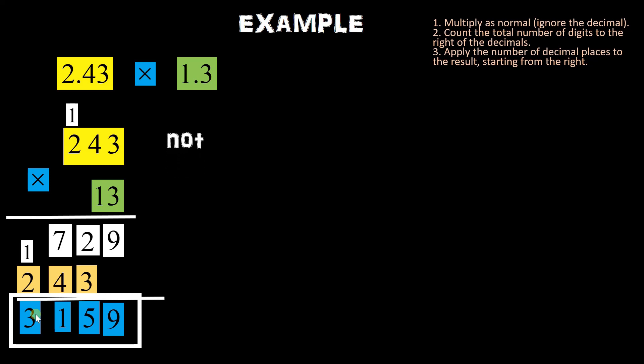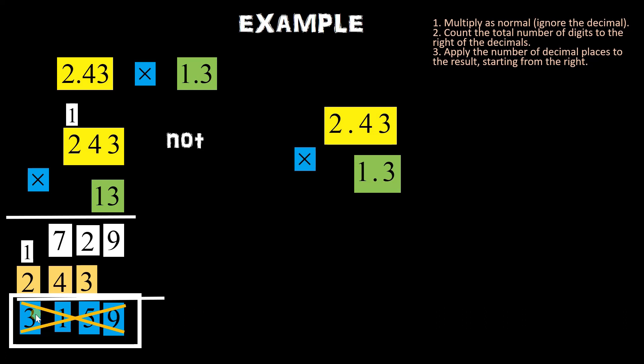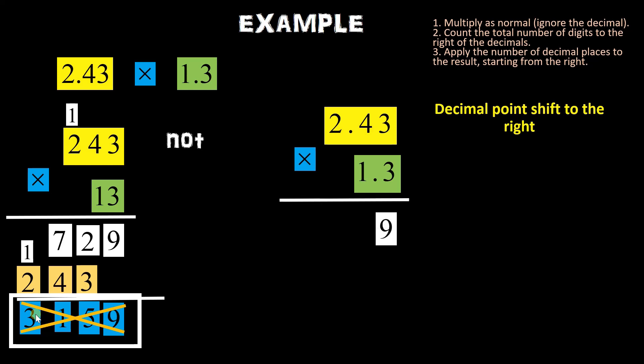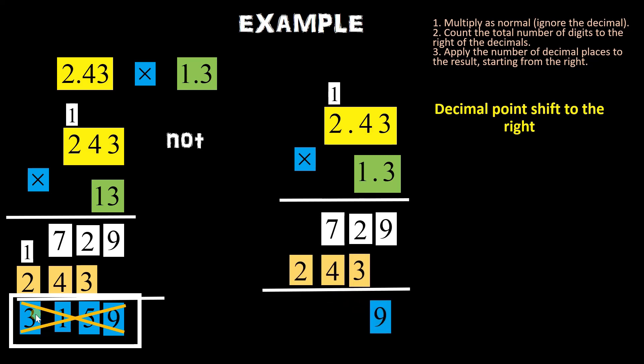Ngayon sagot natin ay 3,159. Pero hindi yan yung sagot natin pagdating dito sa multiplying decimal — step 1 nya i-ignore lang natin yung decimal. Kaya itong 2.43 times 1.3, yung decimal ngayon i-ishift natin to the right. Mag-multiply lang tayo ng ganun sa ginawa natin kanina nang hindi natin pinapansin yung decimal. Kaya meron tayong sagot na 3,159.